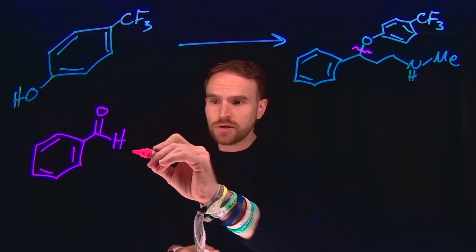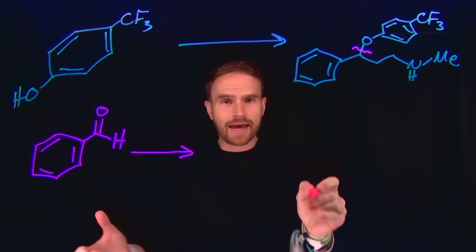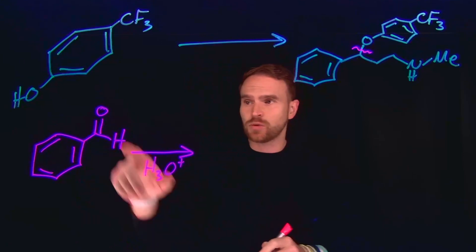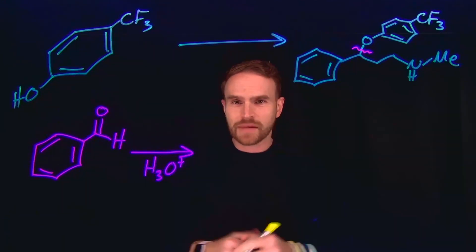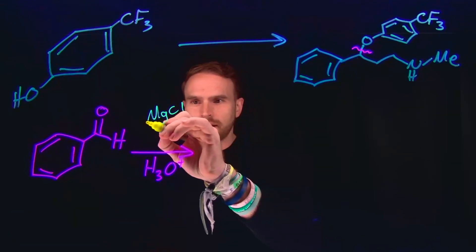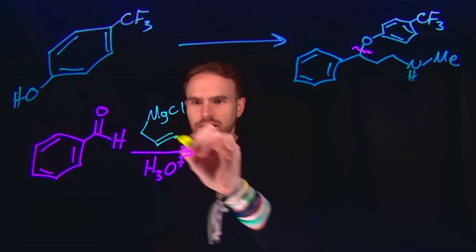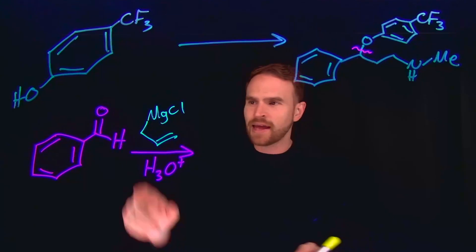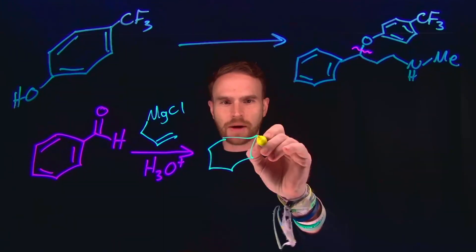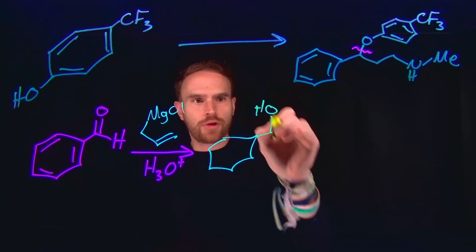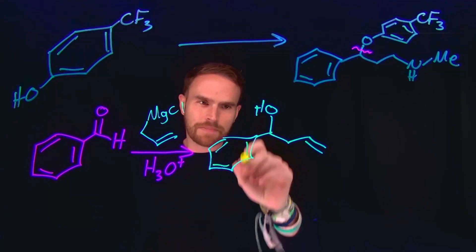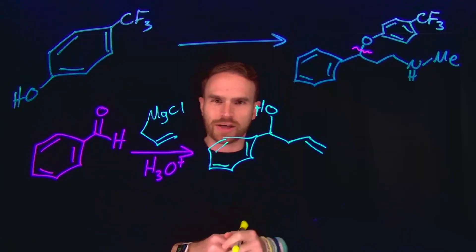Specifically, if we use a Grignard reagent and use an acidic workup, then I know that I can extend the carbon chain and turn this into an OH group at this carbon position. So if I use a Grignard reagent like magnesium chloride, then I know that I can have a carbon chain that contains this alkene on it, adding at this position to give us an alcohol and leaving us behind with the rest of the carbon chain, including this alkene. Once I fill in my pi bonds into my benzene ring, this would be the product of this transformation.